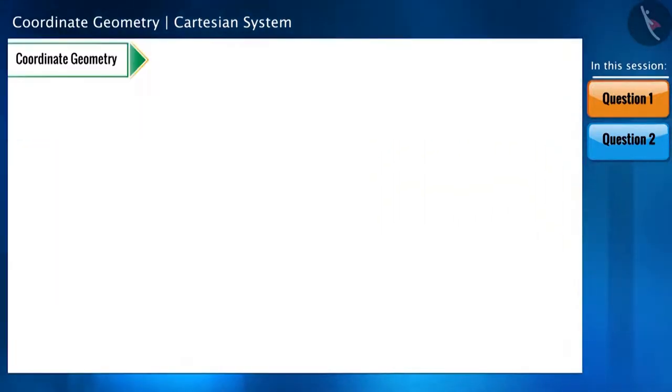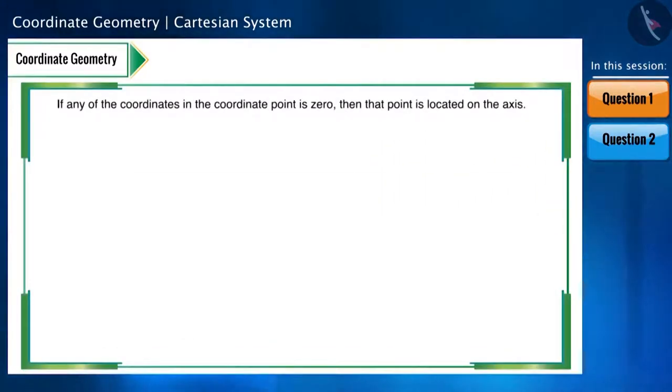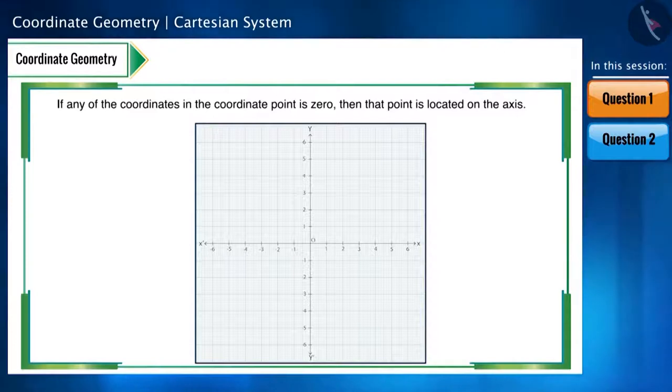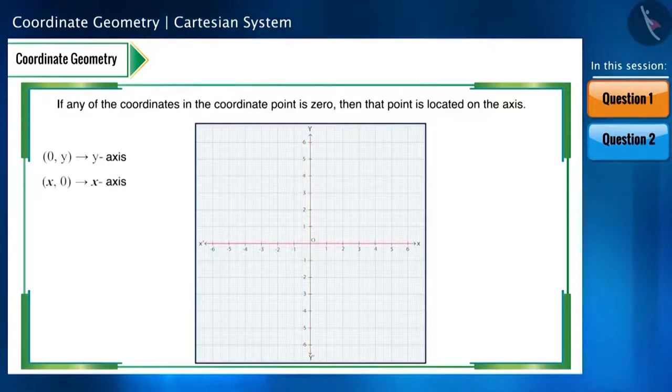You should remember that, if any of the coordinates in the coordinate point is 0, then that point is located on the axis. If the X coordinate is 0, then the point lies on the Y axis. And if the Y coordinate is 0, then the point lies on the X axis.